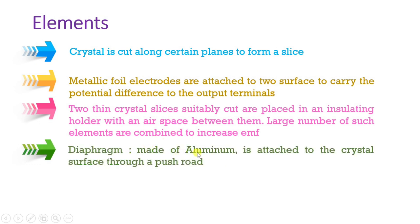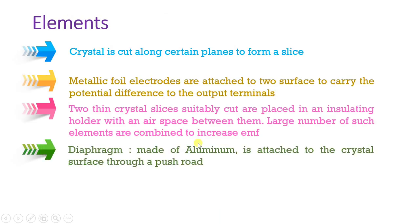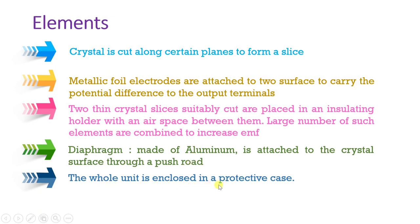The diaphragm is made of aluminium and is attached with a push rod. The diaphragm moves with respect to sound pressure and pushes the push rod, which then applies force to the bimorph crystal. The whole unit is enclosed in a protective case, which gives protection to the crystal microphone.